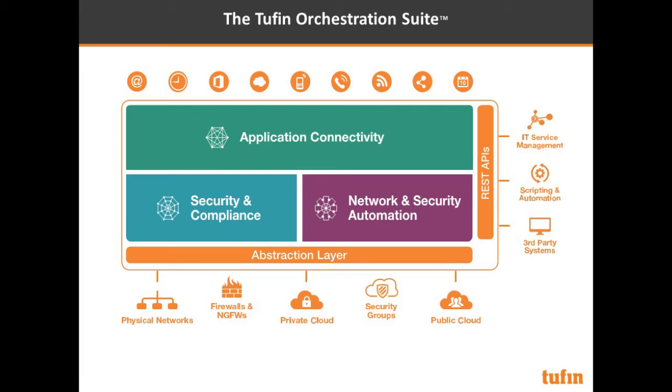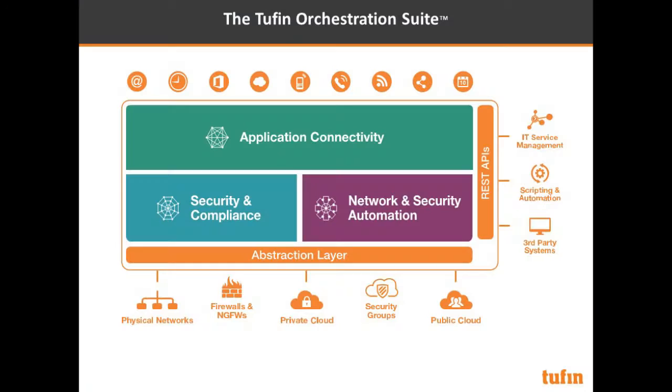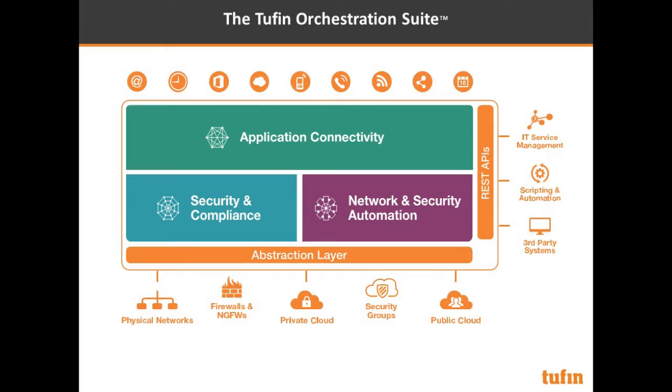This is the Tufin orchestration suite. At the top are enterprise applications — not email or DNS, but custom apps your business develops internally: supply chain management, whatever drives your operations, whether finance or operations. Those apps require a lot of network changes. At the bottom is the network infrastructure that delivers those apps. Tufin is the middleware that enables you to implement the required network changes quickly, efficiently, and securely.